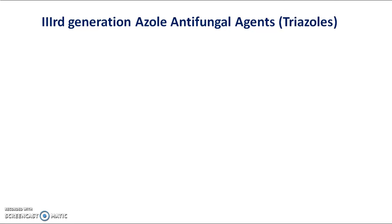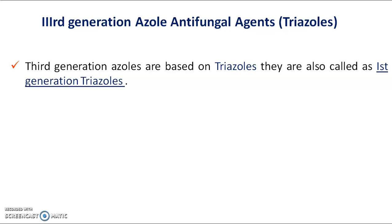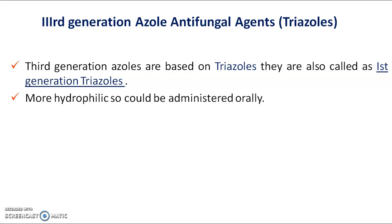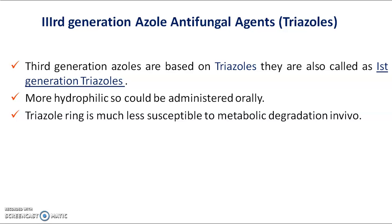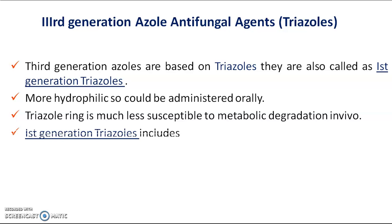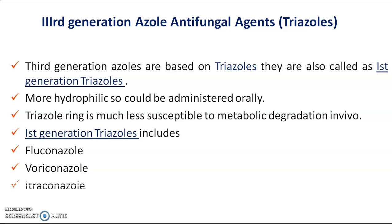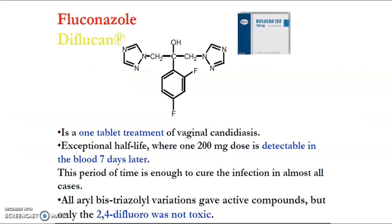Third generation azole antifungal agents are also called triazole derivatives. They are based on triazoles and are also referred to as first generation triazoles. They are more hydrophilic so can be administered orally, and the triazole ring is much less susceptible to metabolic degradation in vivo. Examples of triazoles include fluconazole, voriconazole, itraconazole, and posaconazole.